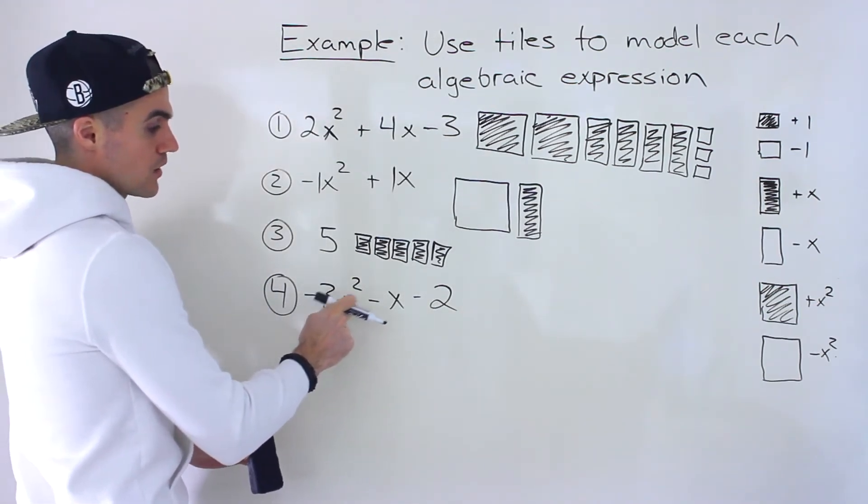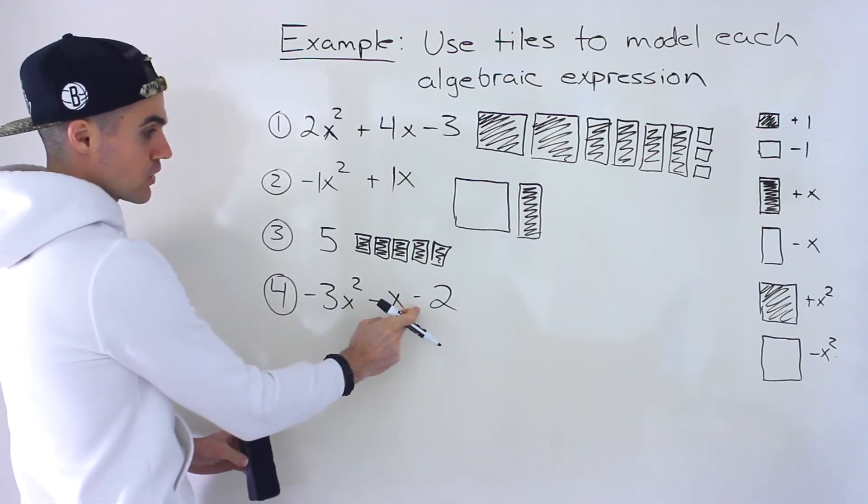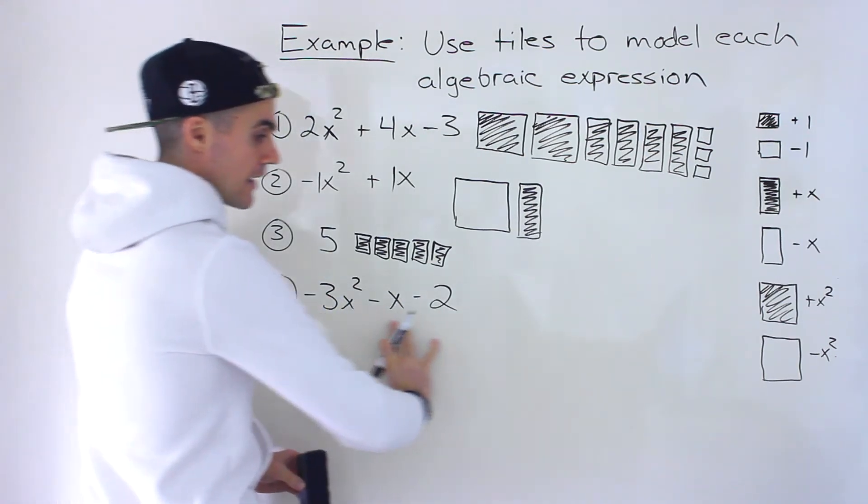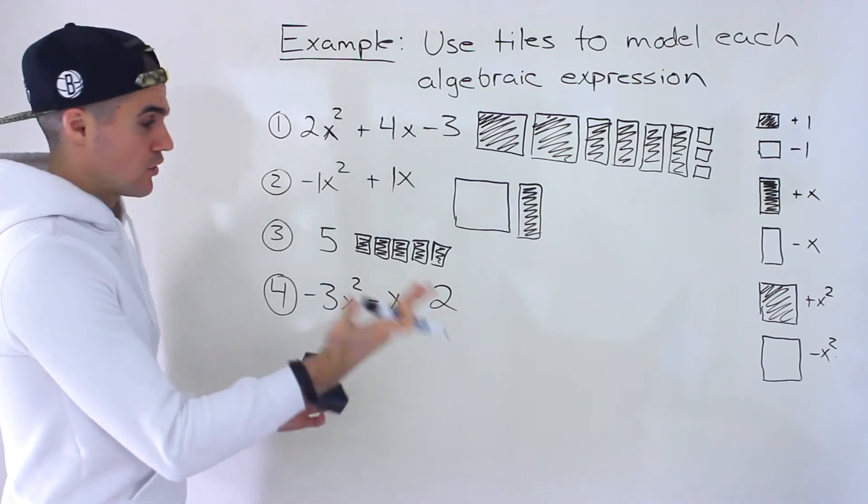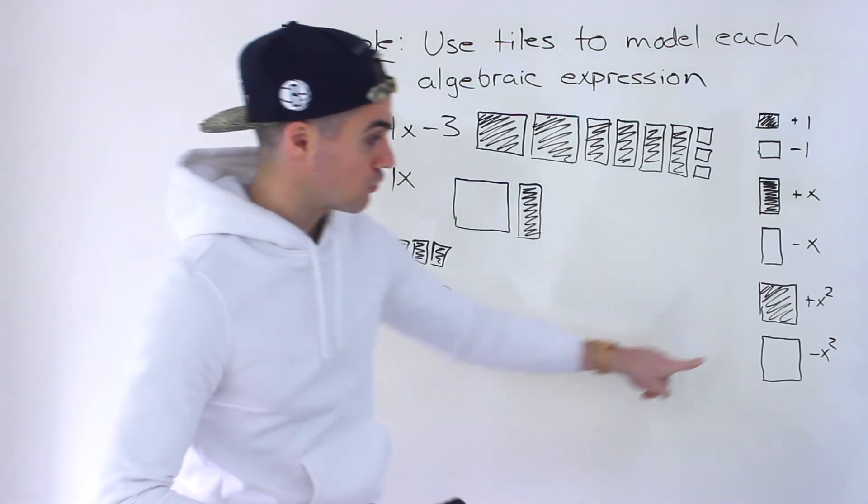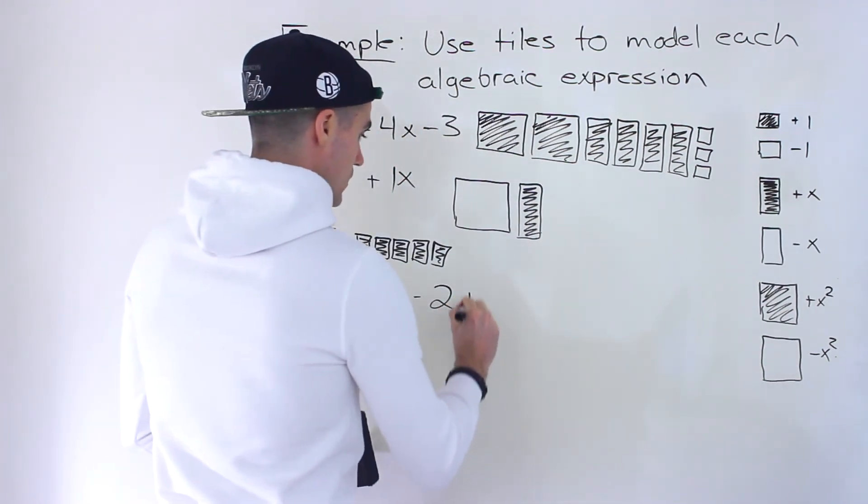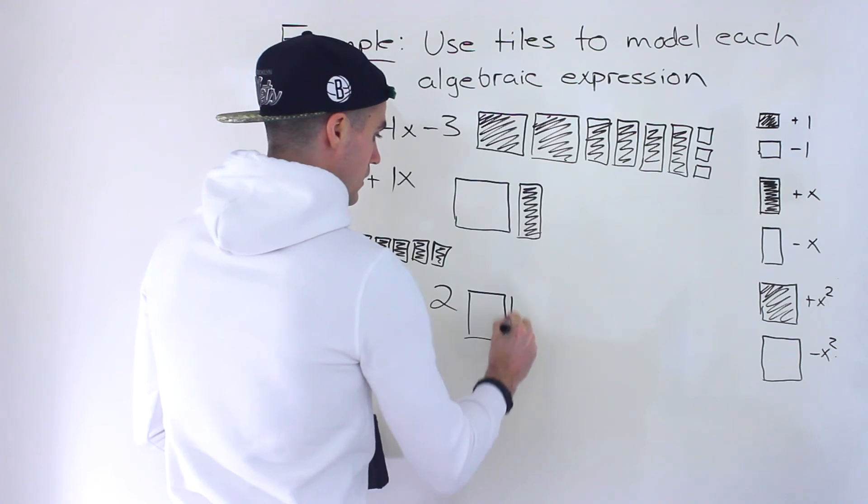And then we have minus 3x squared minus x minus 2. So notice negatives all across the board. We know that all of the shapes are going to be hollow. Notice we have minus 3x squared. So there are three of these hollow large squares. So we'll have 1, 2...